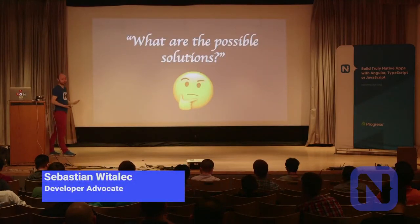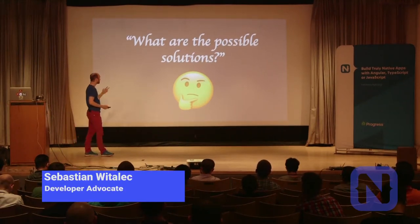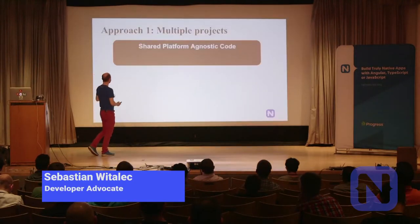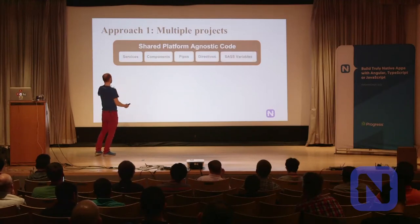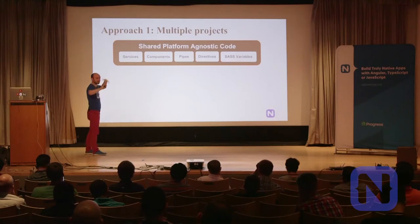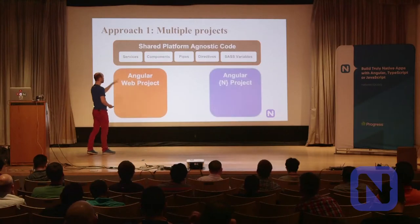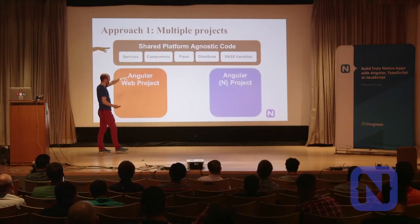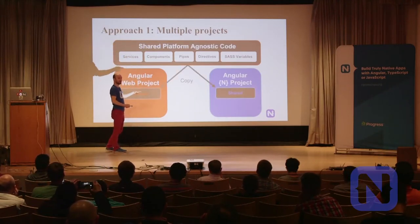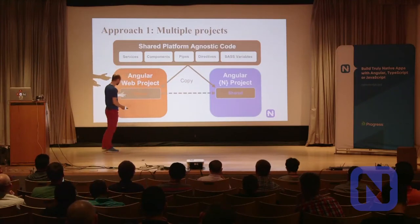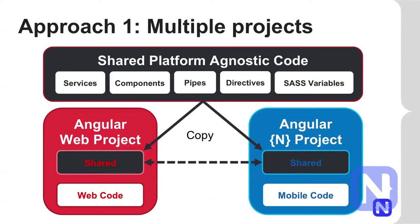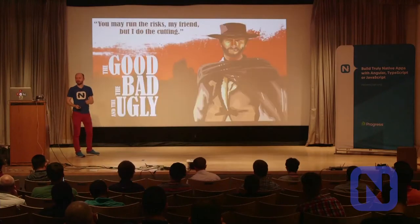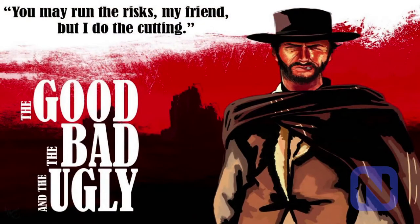What can we really share? Pretty much all our TypeScript code — Angular components, pipes, routes, directives — we can reuse that. Large chunks of SASS are just picking the right properties to style a text field versus an input. So, two possible solutions to achieve code sharing: approach number one is multiple projects. You create a shared platform-agnostic code folder containing services, components, pipes, directives, then create two separate projects — an Angular web project and an Angular NativeScript project — and copy the shared folder into each.